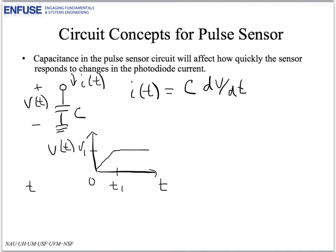So for T less than T1, if we say the slope of that line is M, then V is equal to M times T, and dV dt is just M. And for T greater than T1, the voltage is constant, so dV dt is zero.